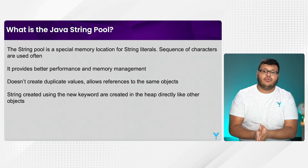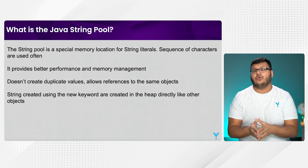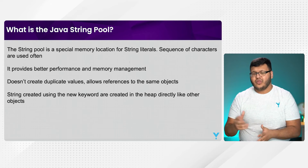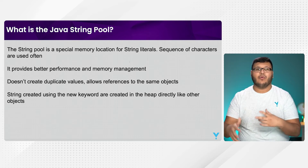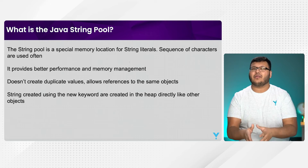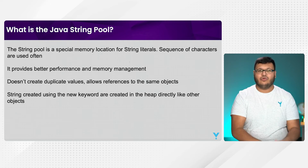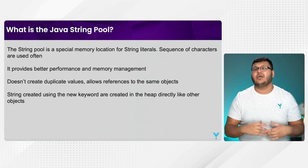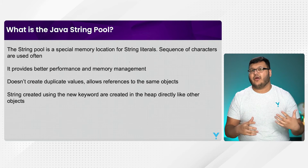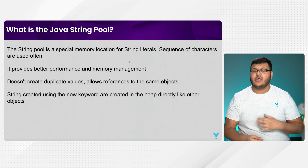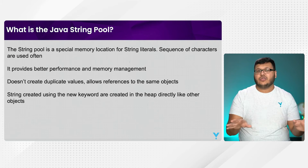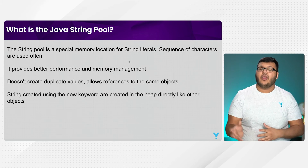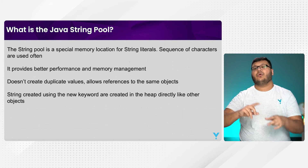More specifically, the string pool actually holds string literals. The technical distinction is how we make the string — basically using the new keyword or not. In Java, we're able to represent characters with double quotation marks. When we give just the double quotation marks with some characters, we're making a string literal, and these string literals are stored in the string pool.